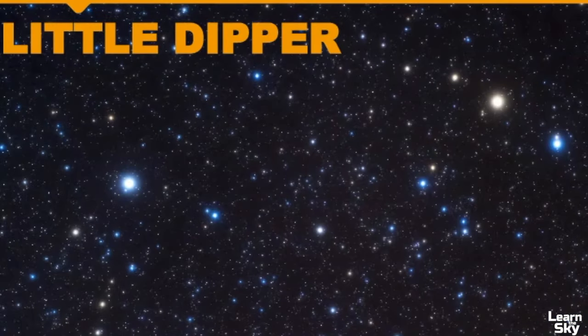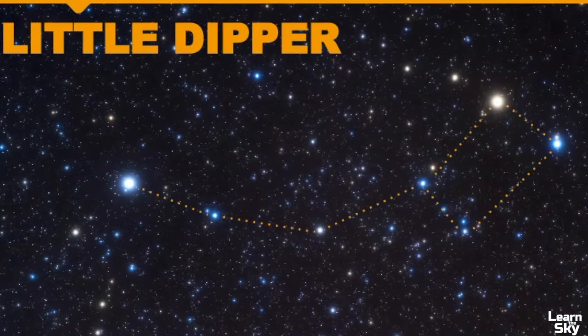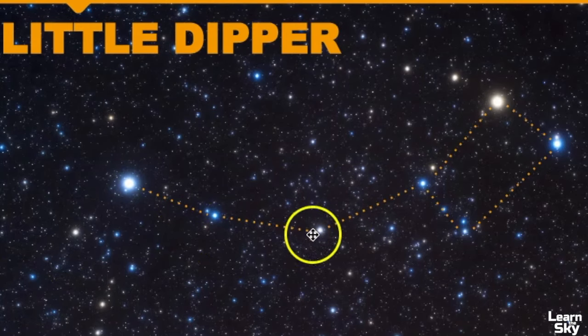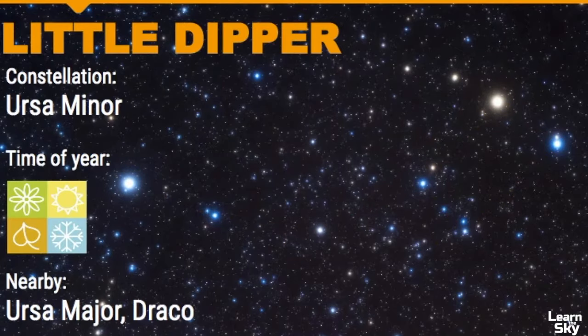The next asterism we'll learn is one we've already mentioned: the Little Dipper. Its shape is slightly different than the Big Dipper — its handle is convex instead of concave, and the stars do not have equal brightness like the Big Dipper does. The Little Dipper is really classified as Ursa Minor, another constellation you can see all year round. It's classified as a circumpolar constellation located next to Ursa Major and Draco. The tail of Draco goes in between the Little and Big Dipper — that's how I find Draco.